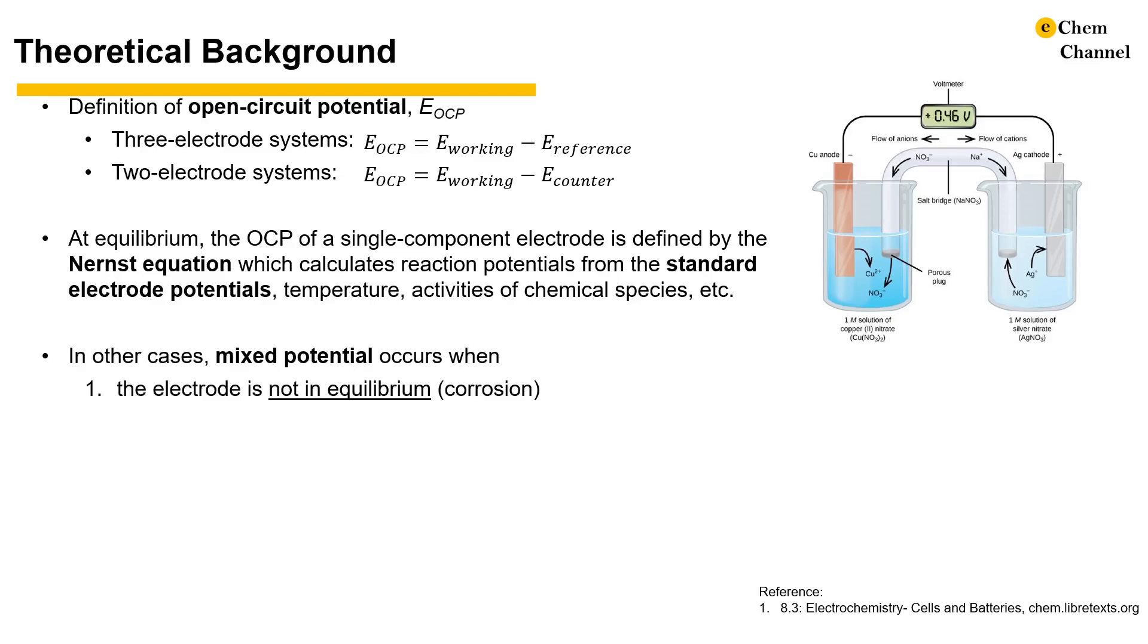When the electrode is not in equilibrium or contains more than one component, the mixed potential arises as two or more half-reactions with different electron transfer kinetics occur on the electrode. In corrosion, mixed potential develops as the anodic and cathodic partial currents do not belong to the same couple. For example, the anodic partial current is due to metal dissolution, while the cathodic partial current is due to oxygen reduction.